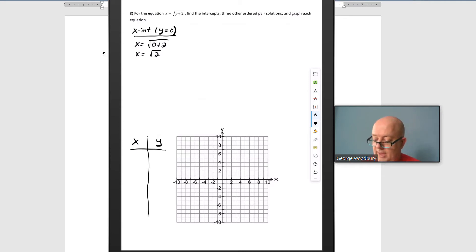x equals the square root of 0 plus 2, x equals the square root of 2. And although that is the intercept, square root of 2 comma 0, I need to have an idea of where to put that on the graph. Using a scientific calculator, the square root of 2 is about 1.4.